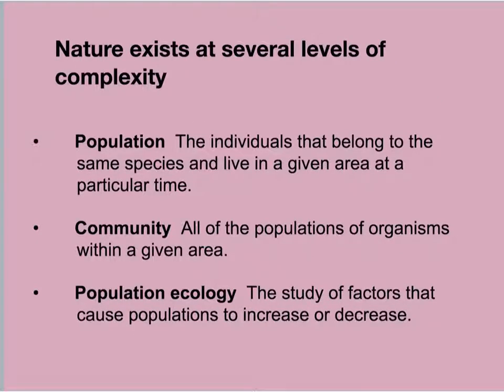Nature exists at several levels of complexity. The environment around us exists as a series of increasingly complex levels: individuals, populations, communities, ecosystems, and eventually the biosphere. The simplest level is the individual — a single organism. Natural selection operates at the level of the individual because the individual is the one that must survive to reproduce.